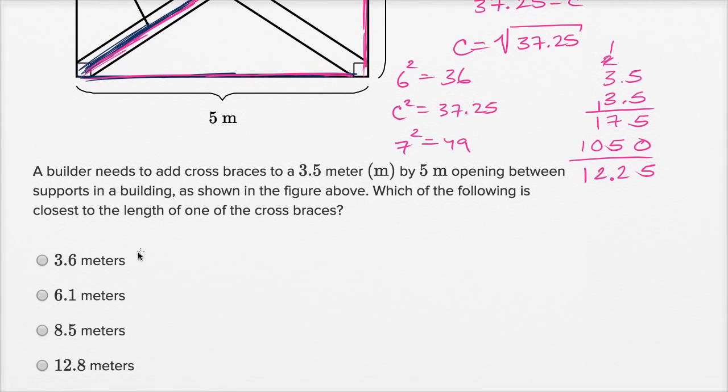Let's see, out of our options, 6.1 is looking pretty good. It's definitely not going to be 8.5, that squared would be greater than 64. 3.6 meters squared would be less than 16. So 6.1 is looking good, a little bit more than 36, which 37.25 is.